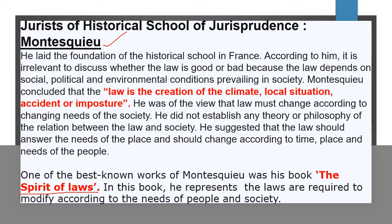जैसे जैसे किसी society में उनकी needs में change होता रहता है, law का भी development या change आता रहता है। Montesquieu अपनी definition में कहते हैं, 'law is the creation of the climate, local situations, accident or imposture।' ये कहते हैं law ना अच्छा होता है ना बुरा होता है क्योंकि the law depends on social, political and environmental conditions prevailing in the society। किसी society की जो social, political and environmental conditions हैं, उन पे depend करता है कि आखिर हमारा law कैसा होगा।